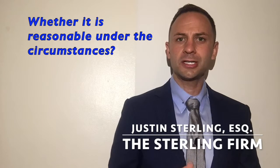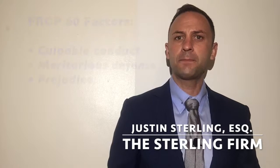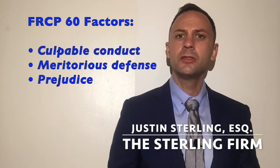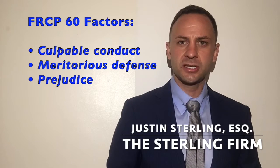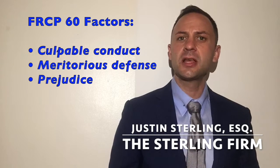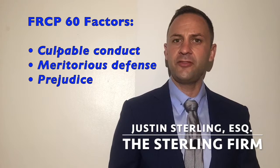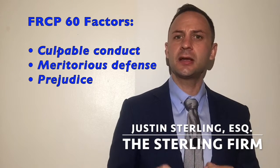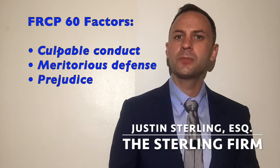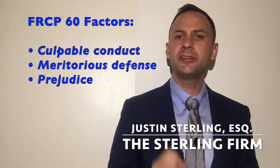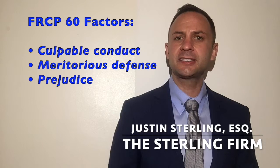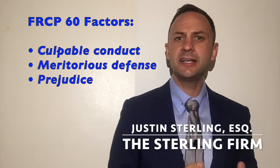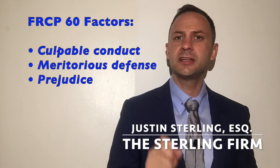In federal court, the grounds to set aside a default judgment are pursuant to Rule 60 of the Federal Rules of Civil Procedure. The court considers three factors when deciding whether there exists good cause to set aside a default: one, whether the defendant's culpable conduct led to the default; two, whether the defendant has a meritorious defense; and three, whether setting aside default would prejudice the plaintiff.